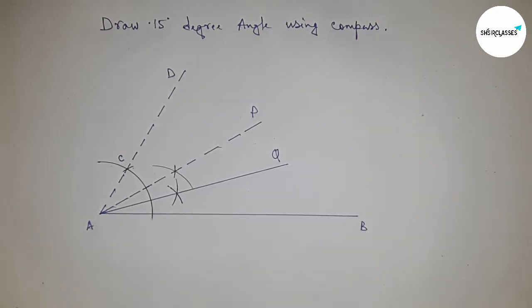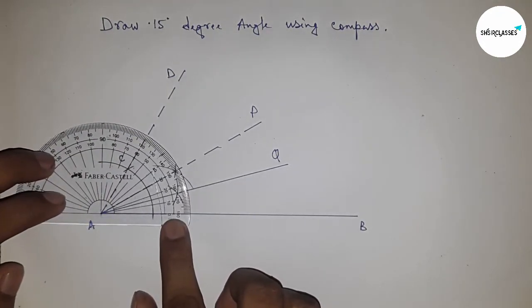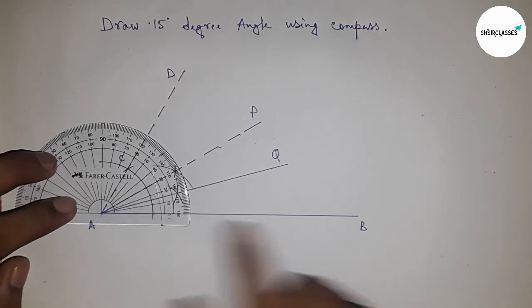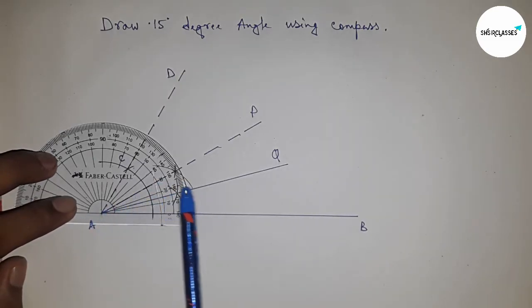Now checking angle QAB is 15 degrees or not. So this is 15 degree angle perfectly. Angle QAB equal to 15 degrees.